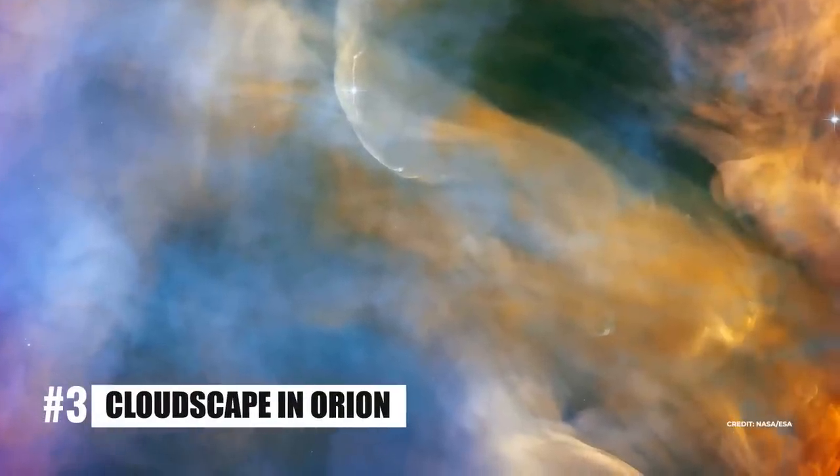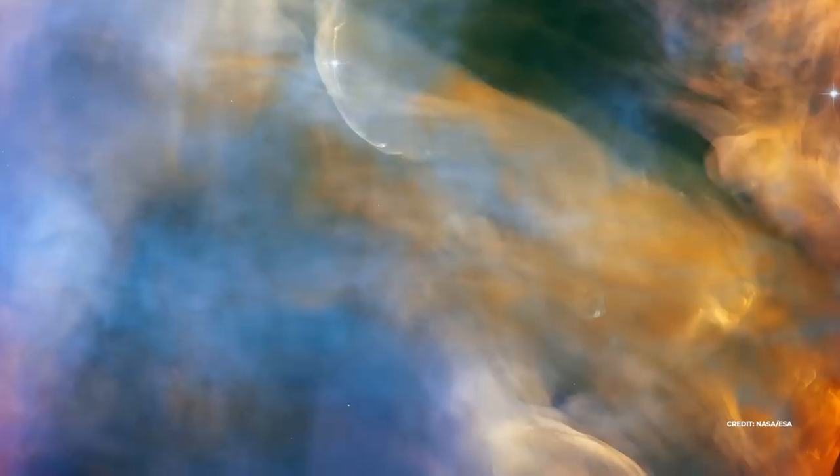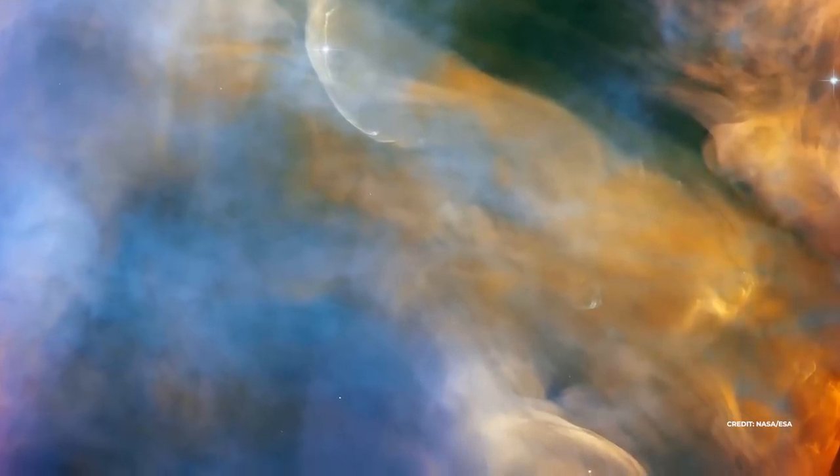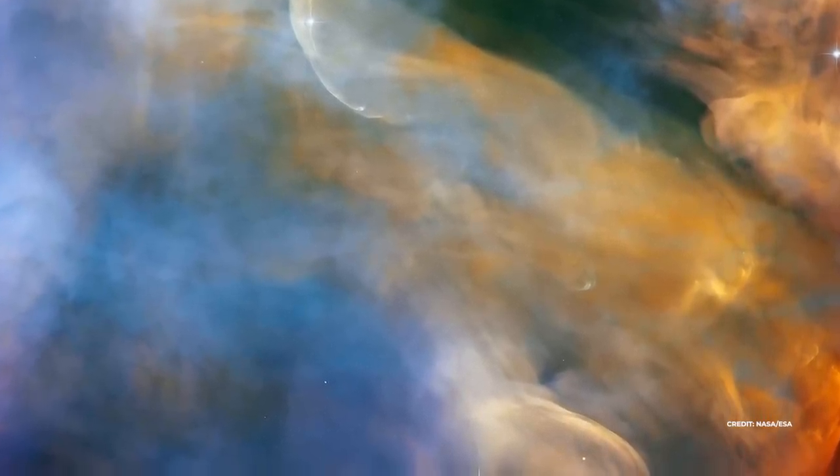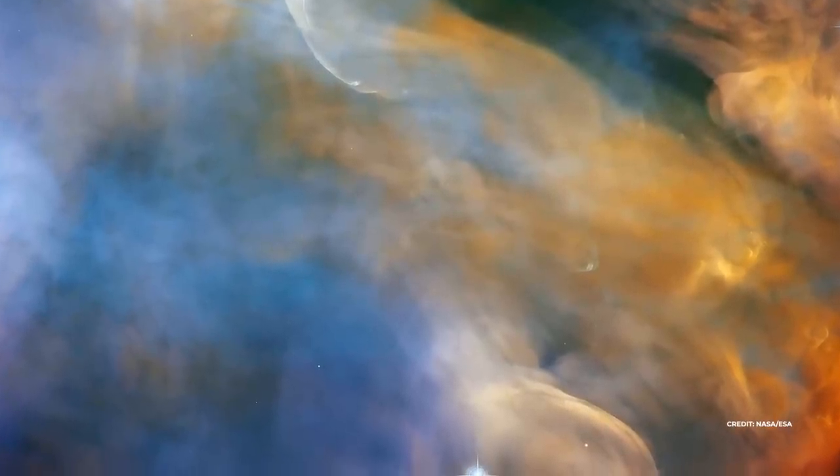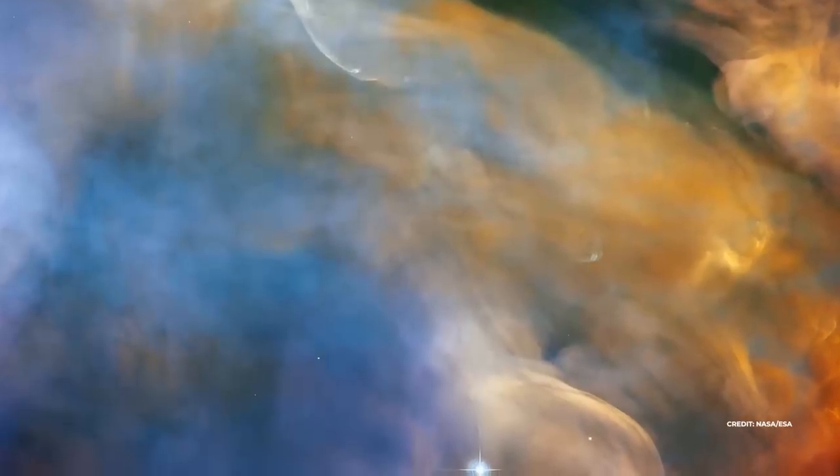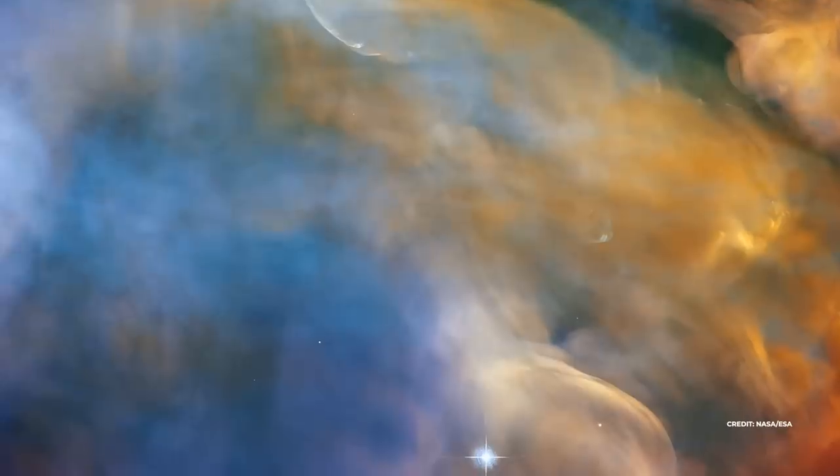The NASA ESA James Webb Space Telescope captured the colorful region around Herbig Haro object HH505. Herbig Haro objects are bright regions around young stars that arise when shockwaves from stellar winds or jets collide with neighboring gas and dust at high speeds.